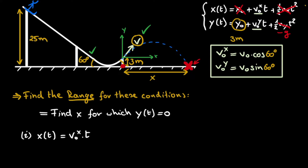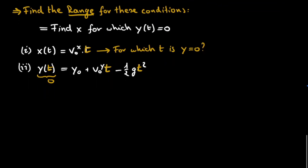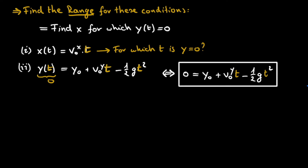However, this equation does not involve y, so we cannot directly find x where y of t equals zero. But this equation does involve t. So we rephrase the question: for which time t is y equal to zero? Then we fill this t into the x-equation. To find t, we use the second kinematics equation: y of t equals y-zero plus v-zero-y times t minus one-half times g times t squared. We need the specific t for which the left-hand side equals zero. This gives a quadratic equation in t, and all coefficients are known quantities — for instance, v-zero-y is the magnitude of the initial velocity multiplied by sine of 60 degrees.